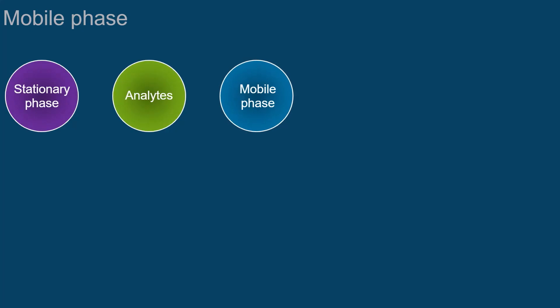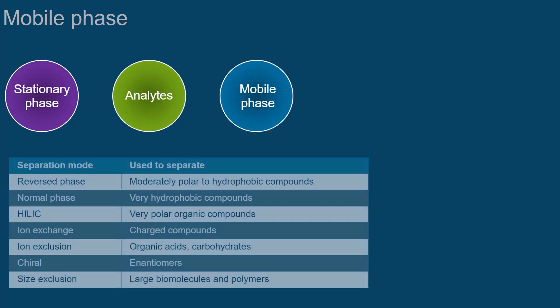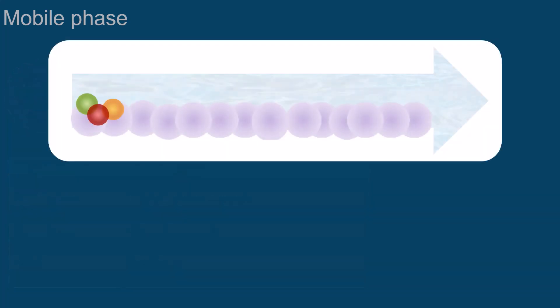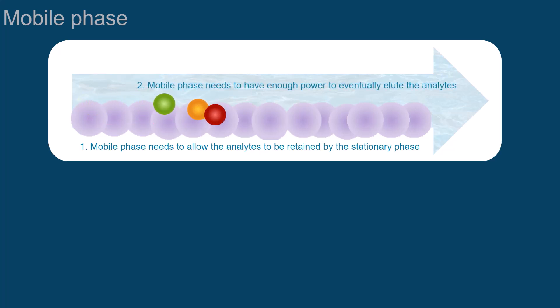Which mobile phase is most suitable depends on which separation mode you want to apply, and consequently also on which stationary phase you have chosen. Remember that at the beginning of the analysis, the mobile phase must allow the analytes to be retained by the stationary phase, but also have sufficient elution power to eventually remove the analytes from the column.